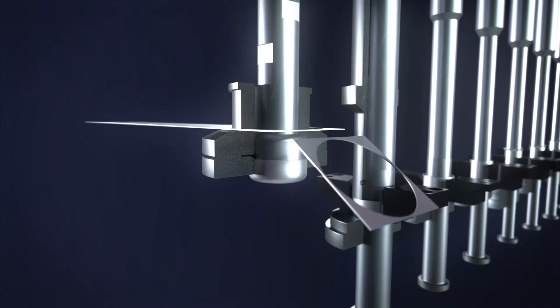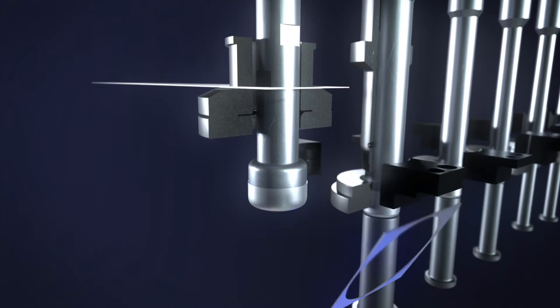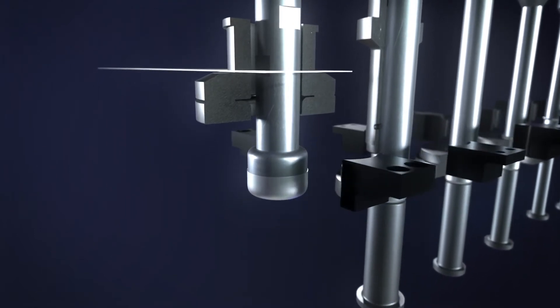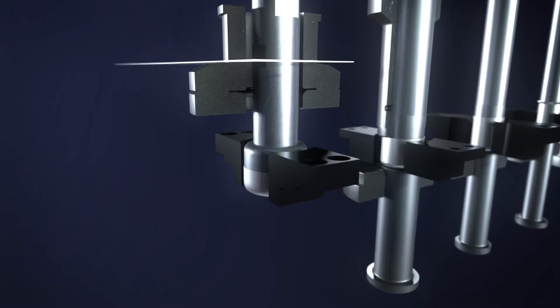In the deep-drawn process, a flat blank is formed into a hollow body that is open on one side. The material is then formed into the desired shape in several forming steps, using tools that are individually designed for each part.